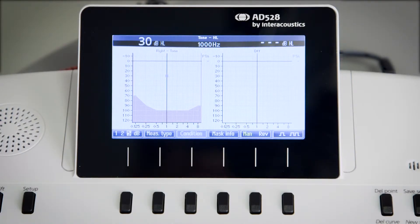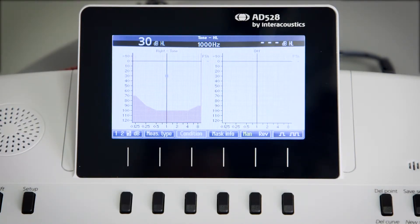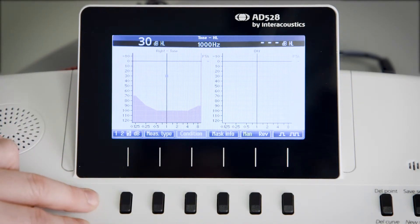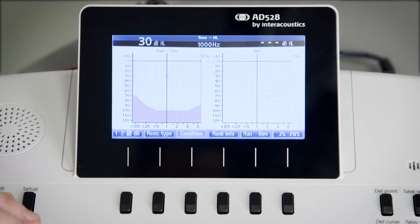Let's have a look at how we can use the function keys during tone audiometry. The function keys are the six keys underneath the displays that change function depending on which test we are in.